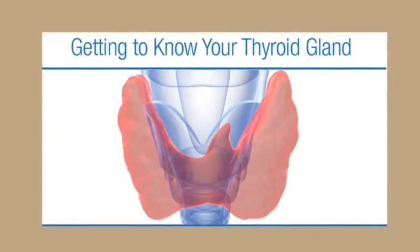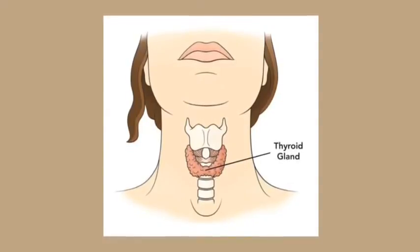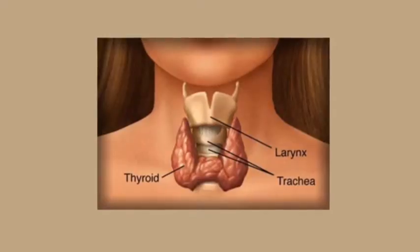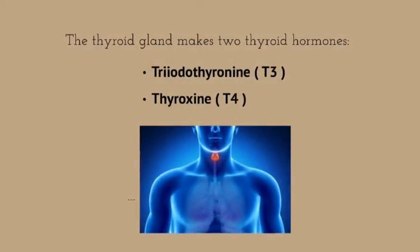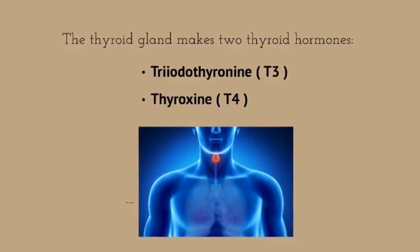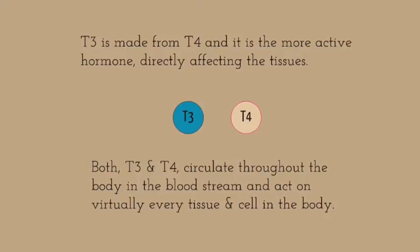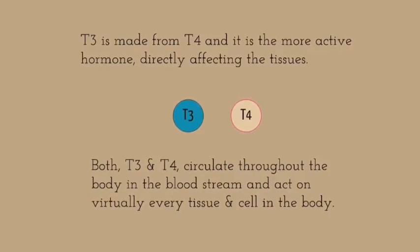The thyroid gland is a 2-inch long, butterfly-shaped hormone-secreting gland located in the front of the neck below the larynx, or the voice box. The thyroid gland makes two thyroid hormones, T3 and T4. T3 is made from T4 and is the more active hormone, directly affecting the tissues. Both hormones circulate throughout the body and act on virtually every tissue and cell.